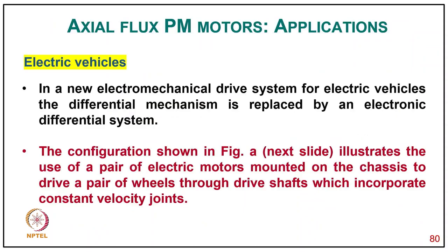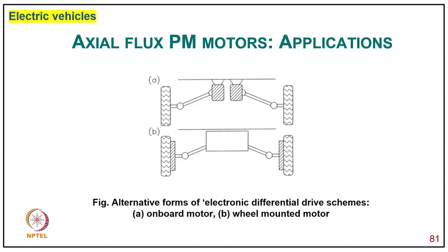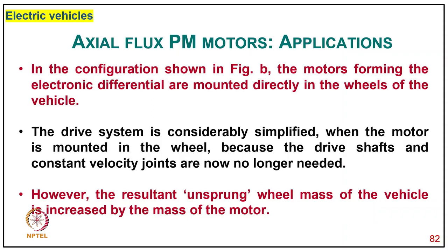Coming to applications of axial flux motors: for electric vehicles, in the new locomotive drive system the differential mechanism is replaced by an electronic differential system. The configuration illustrates the use of a pair of electric motors mounted on the chassis to drive a pair of wheels through the drive shaft incorporating constant velocity joints. In the wheel-mounted motor configuration, motors forming the electronic differential are mounted directly in the wheels, simplifying the drive system by eliminating the drive shaft and constant velocity joints. However, the resultant unsprung wheel mass of the vehicle is increased by the mass of the motor.